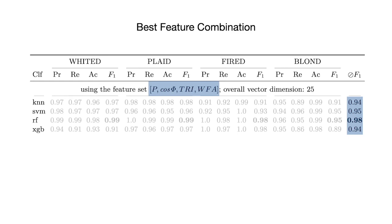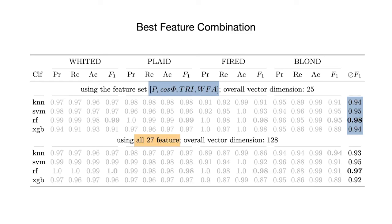We also tested this against using all features. And indeed, as you can see, it actually outperforms all 27 features that have a total dimensionality of 128 using just these four features listed here.